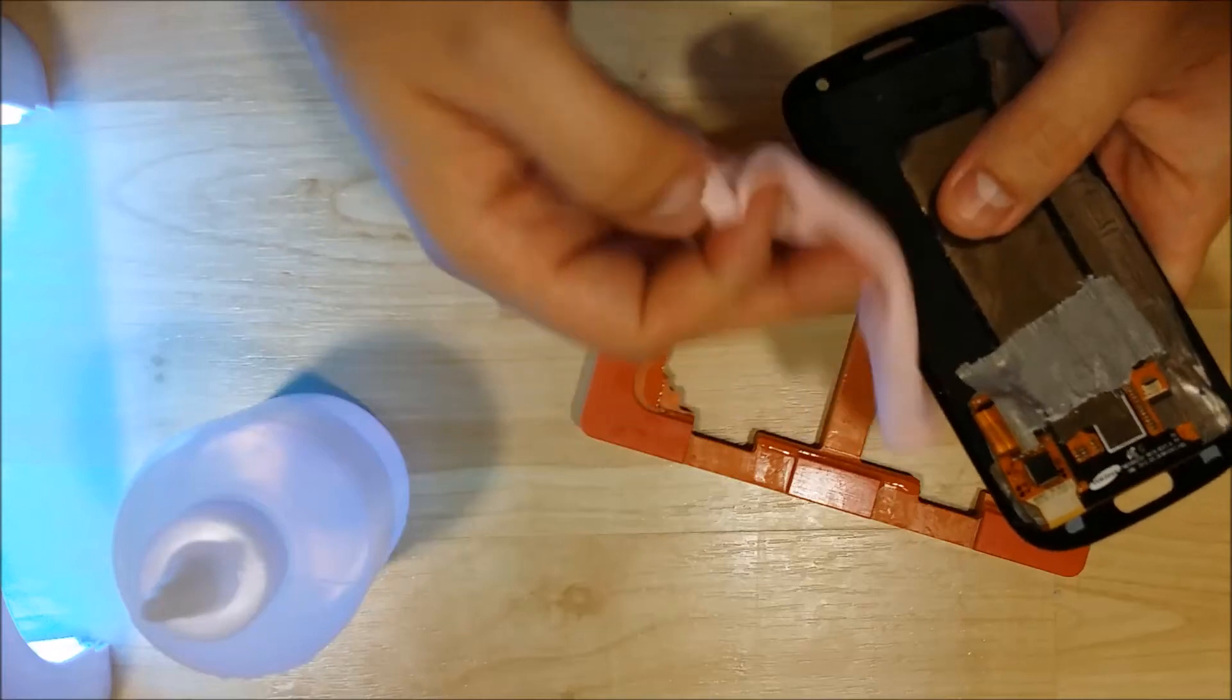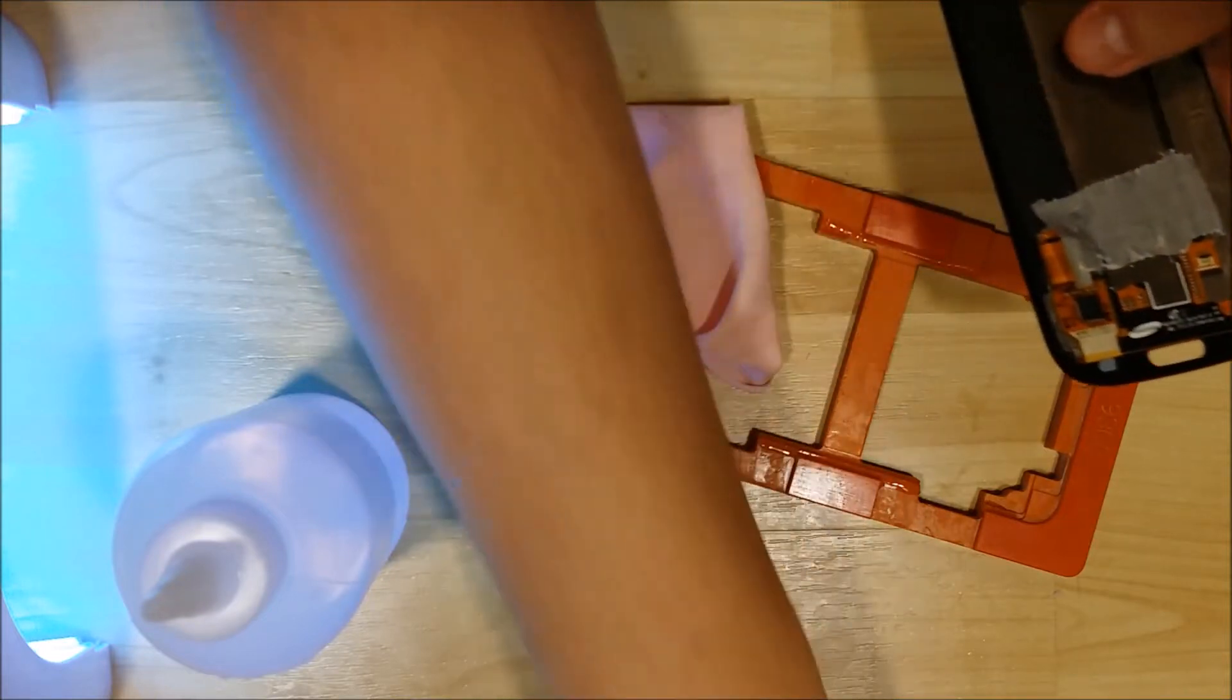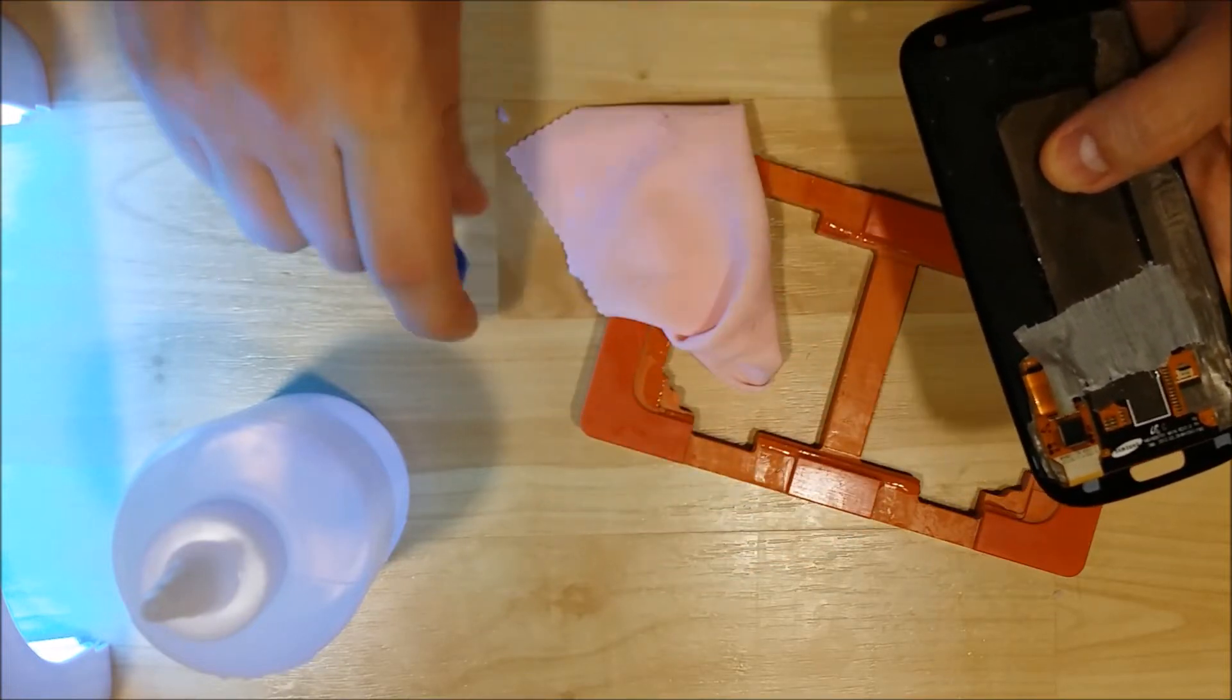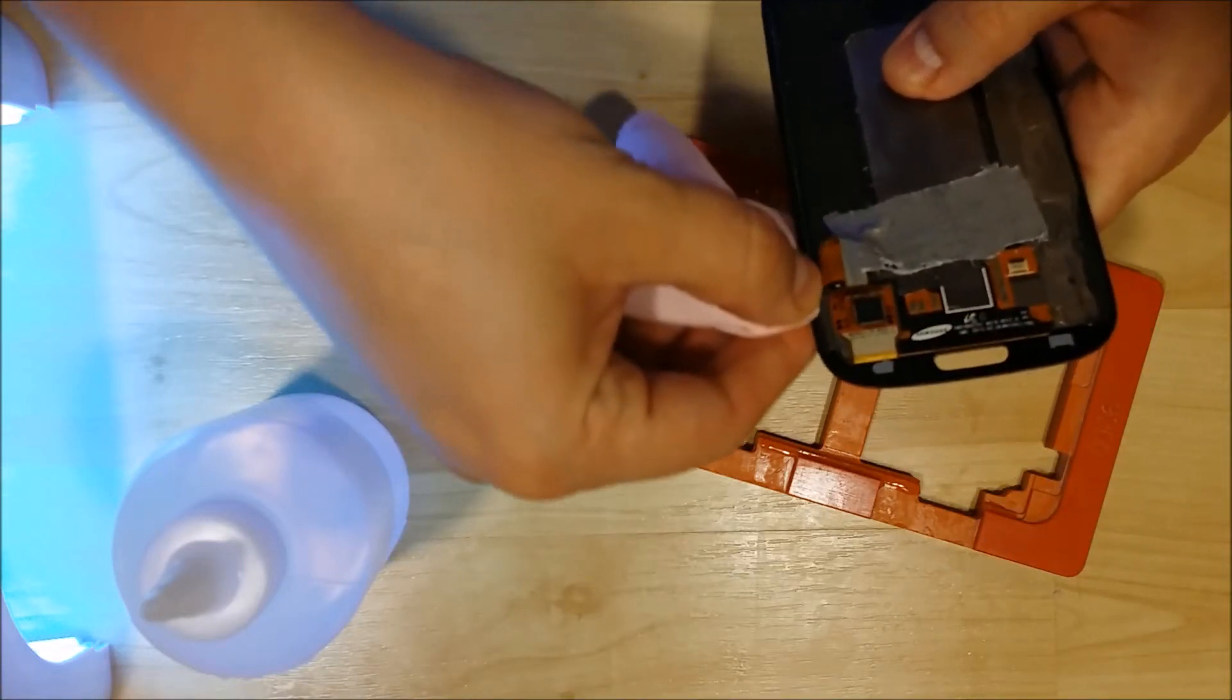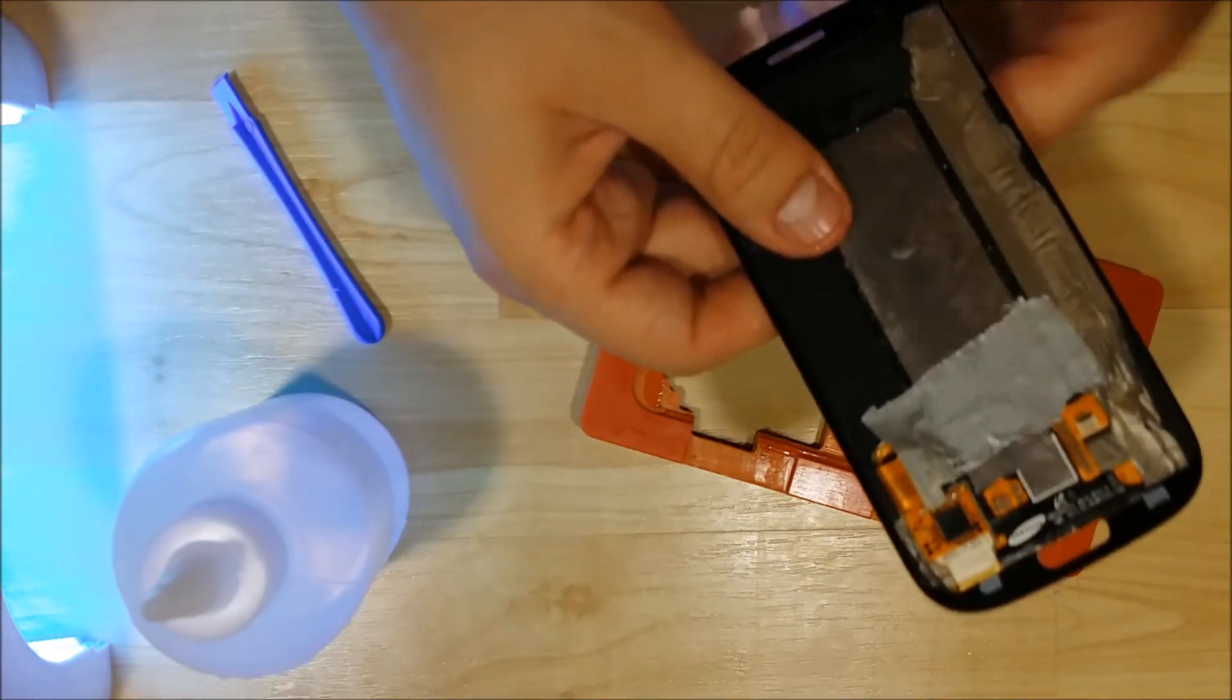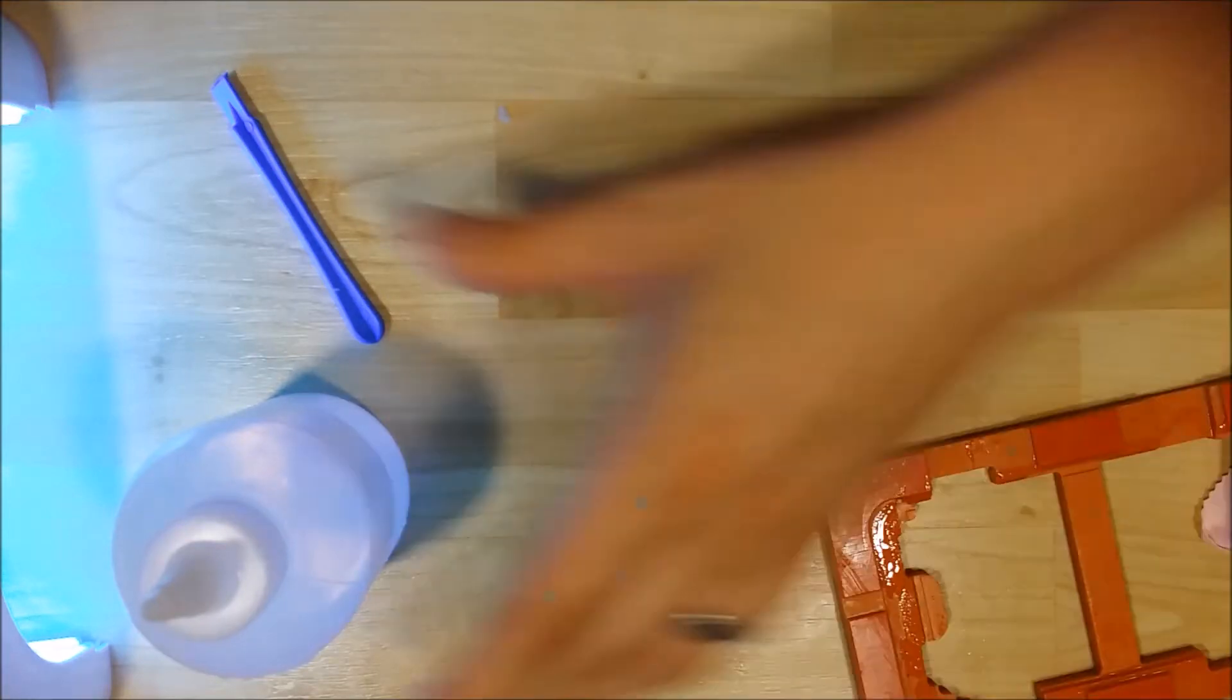This glue almost acts like an oil. It's a little bit more viscous and doesn't leak out immediately. I'm just going to take my pry tool and see if there's any glue underneath that I can get a little bit more out. Just use my fingernail to press underneath the screen a little bit.